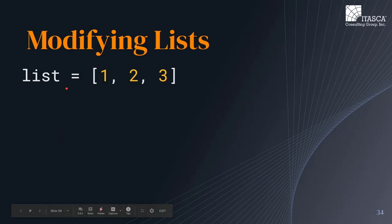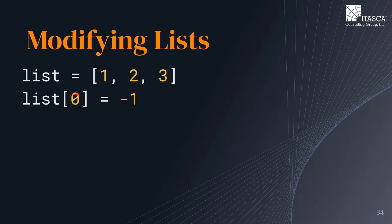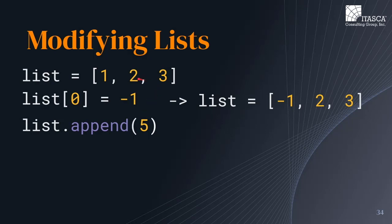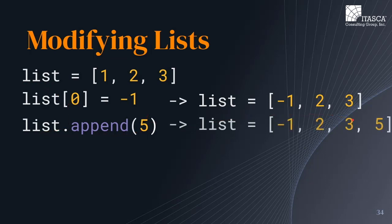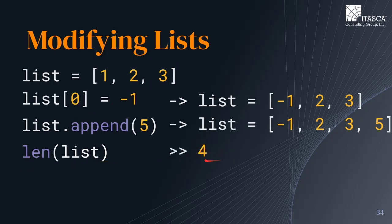Besides simply accessing portions of your list, it's also possible to modify your list after you've initialized it. This is done by using the same accessing syntax and then simply setting that element equal to a new element. It's also possible to add new data to the end of a list by calling the append function — you can simply call list.append and pass in the data you wish to add to the end. If at any point you want to get the length of your list, you can use the len command which will return the number of elements contained in your list. And it's important to note that because lists are indexed at zero, the maximum index is actually the length minus one.